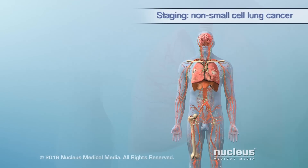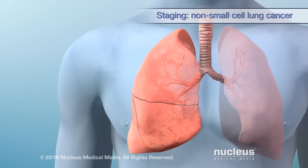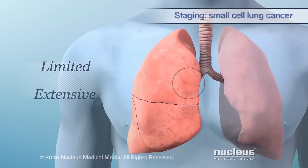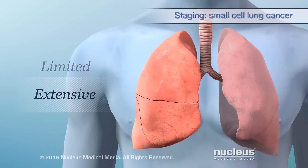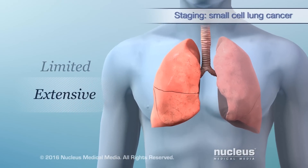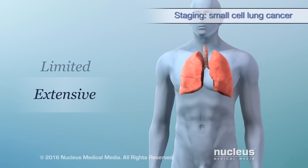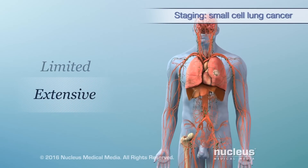There are fewer stages for small cell lung cancer. In its limited stage, cancer is found in one side of the chest only. In the extensive stage, cancer has spread to the other side of the chest or to distant organs.